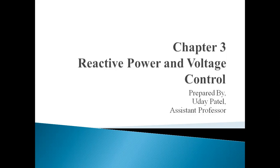We will look at what happens in the active power and voltage control chapter. Reactive power means the fault which is the magnetic field, the electromagnetic field, which is produced by the power required, which is the active power to be defined.